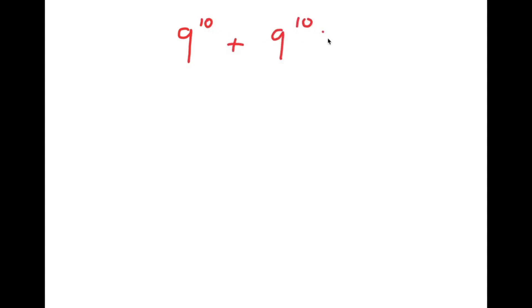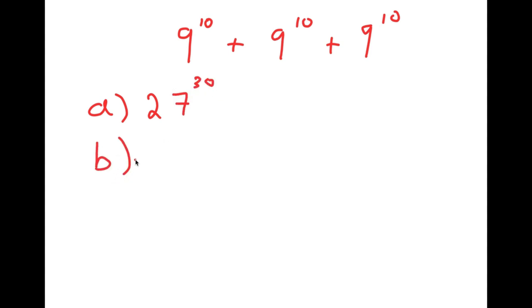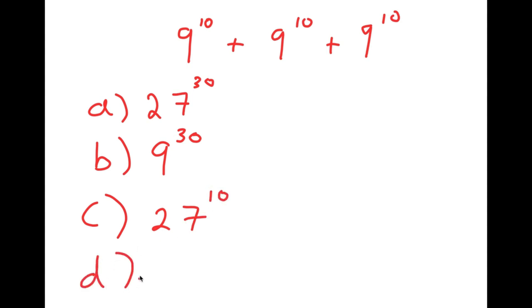In this problem, I'm going to be solving 9 to the power of 10 plus 9 to the power of 10 plus 9 to the power of 10. For this problem, I actually have four answer choices. For A, I have 27 to the power of 30. For B, I have 9 to the power of 30. For C, I have 27 to the power of 10. And for D, I have 3 to the power of 21. So let's go through all these answer choices and see if they're right or not.